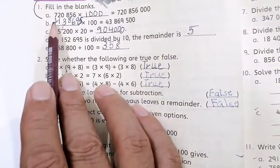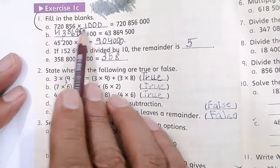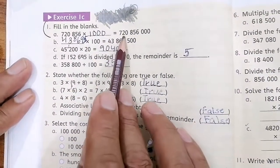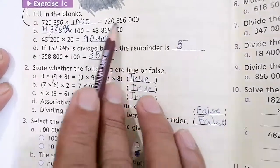Fill in the blanks, first part is given that 720856 multiply dash. This is the answer, 720856000.